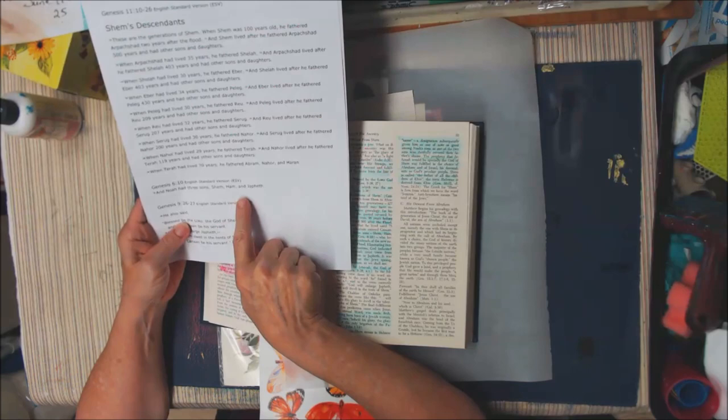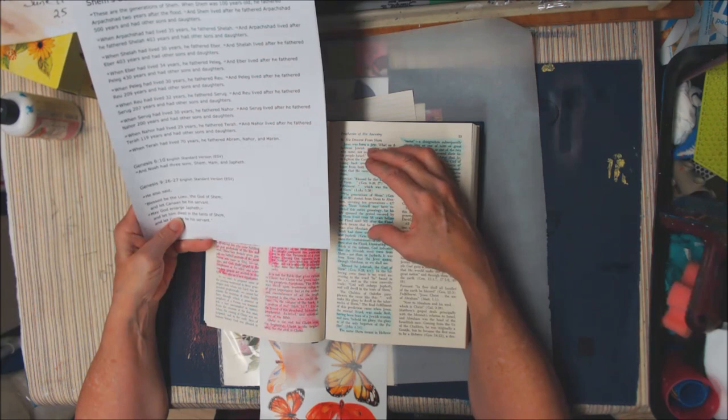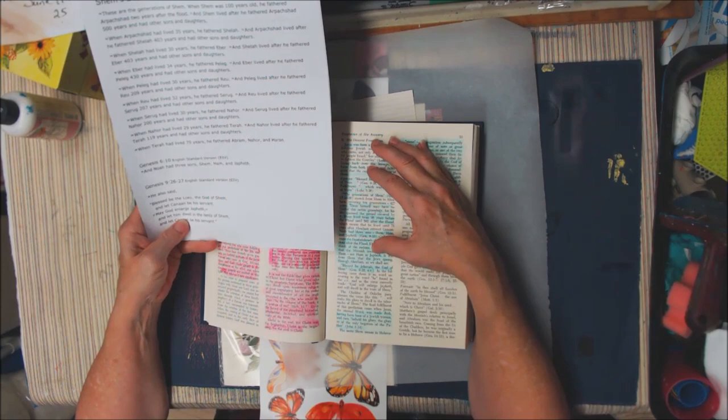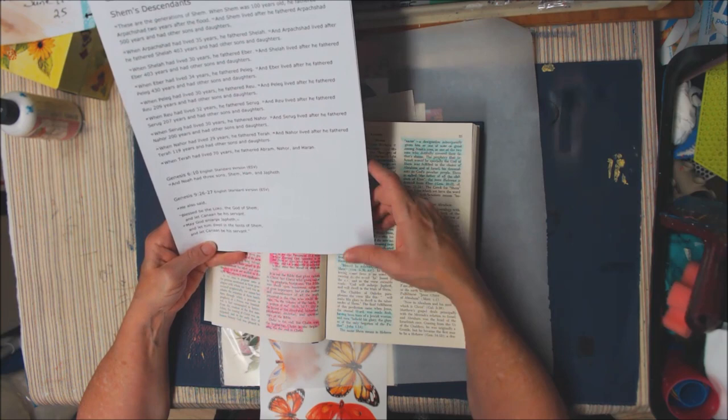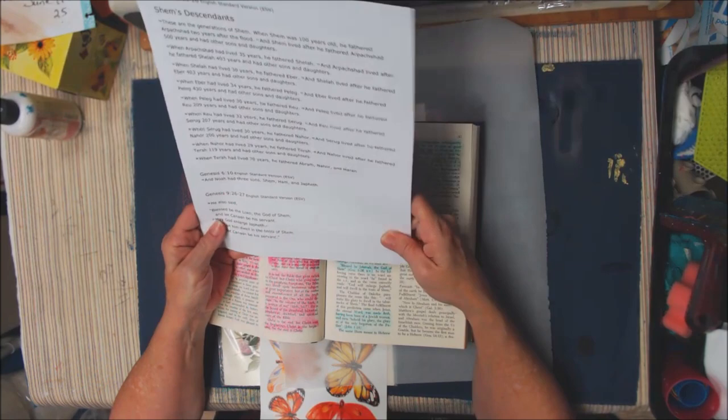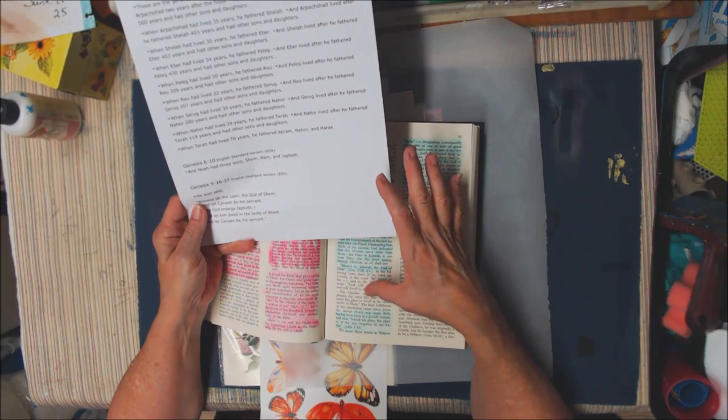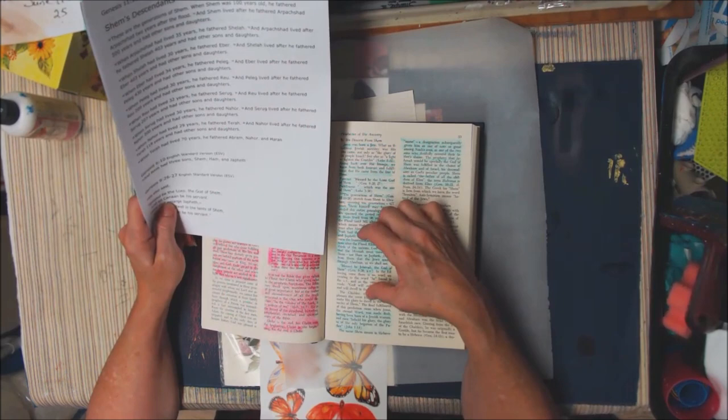Noah had three sons, Shem, Ham, and Japheth. That's Genesis 6:10. These sons became the fountainheads of the new nations after the flood. Eliminating two-thirds of these nations, God indicated that the Messiah must come from Shem, not Ham or Japheth. It was from Shem that the Jews sprang through Abraham. Genesis 9:26 says, Blessed be the Lord, the God of Shem, and let Canaan be his servant. It talks about God dwelling in the tents of Shem.